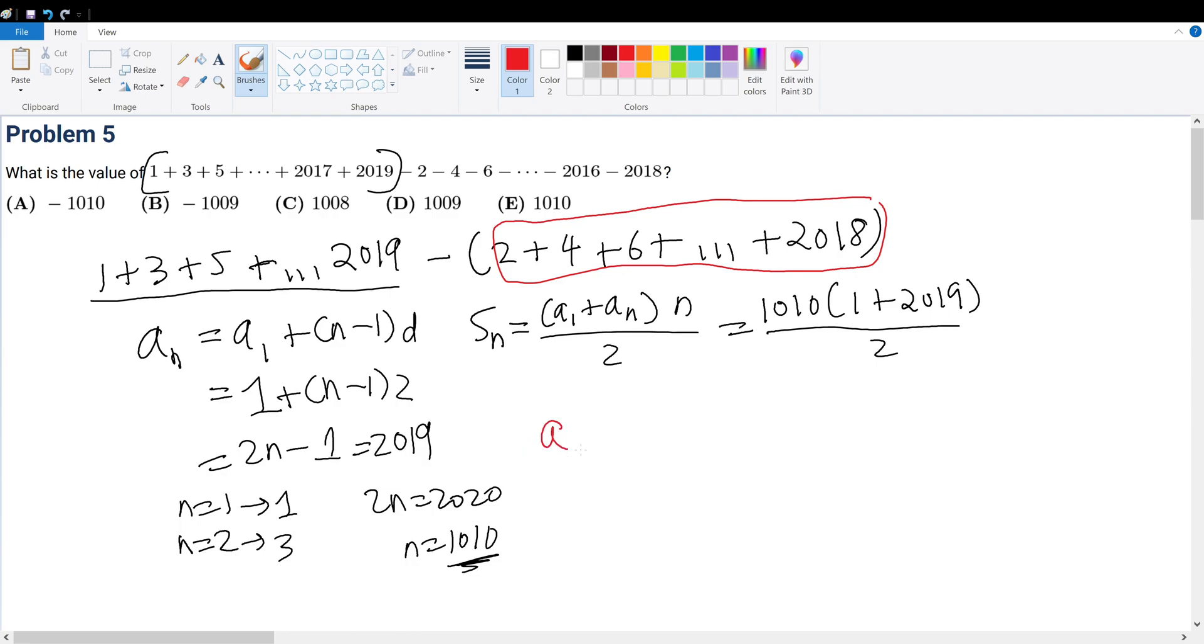We do it with the same thing. a sub n equals the first term plus n minus 1 times 2. But in this case, that's equal to 2n.